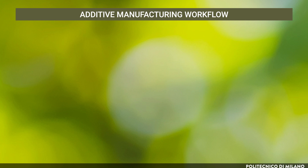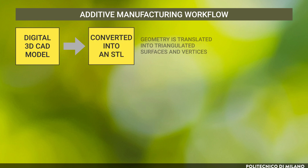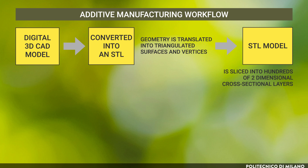The additive manufacturing workflow starts with a digital 3D CAD model that is converted into an STL file, meaning the geometry is translated into triangulated surfaces and vertices. The STL model is sliced into hundreds, sometimes thousands, of two-dimensional cross-sectional layers that are parallel to the 3D printer bed along the building direction. The layer printing paths are then fed one at a time to the 3D printer, which builds the physical part layer-wise from the bottom to the top.